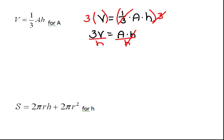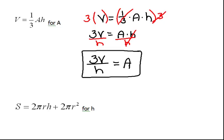When we do that, now we have 3V divided by H is equal to A. Because A is alone, we have done our job and we have solved that equation for A.